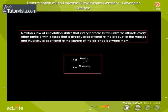F is equal to G M1 M2 by D square, where G is the constant of proportionality called the Universal Gravitational Constant.